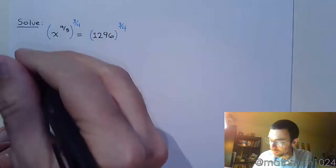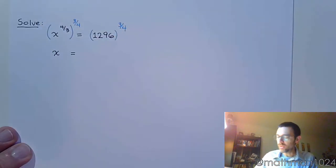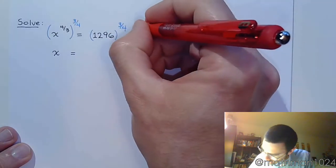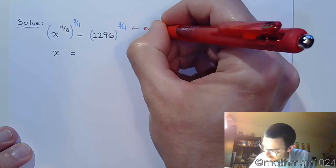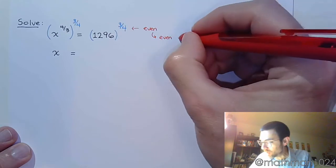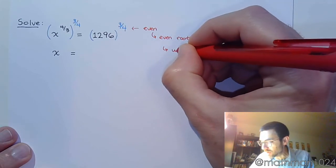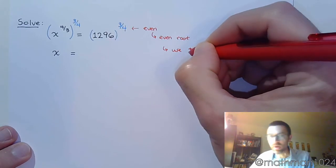Seems simple enough, right? On one side we just get x. On the other side though, this is where you have to be very careful. See, this is an even number, which as we've seen - we saw a long time ago - this means that you have an even root, which means we have to use plus or minus.